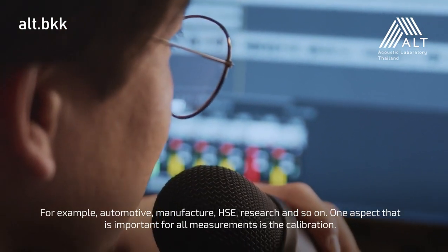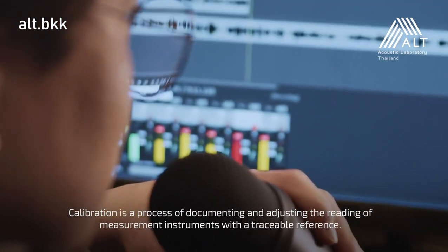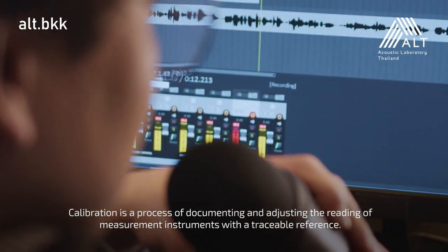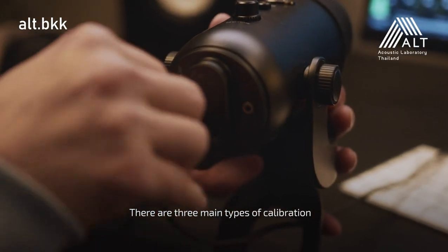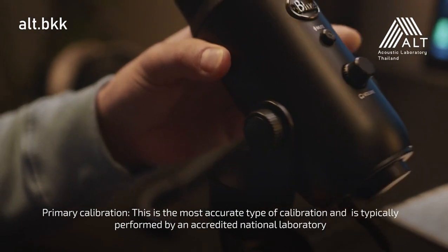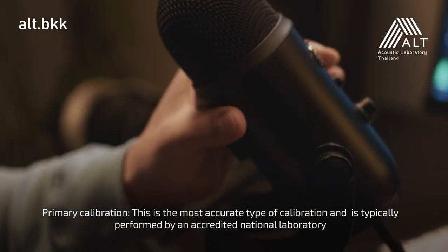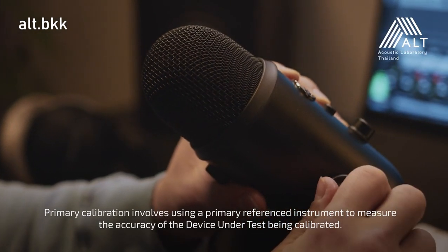One aspect that is important for all measurements is calibration. Calibration is a process of documenting and adjusting the reading of measurement instruments with a traceable reference. There are three main types of calibration. Primary calibration is the most accurate type and is typically performed by an accredited national laboratory.